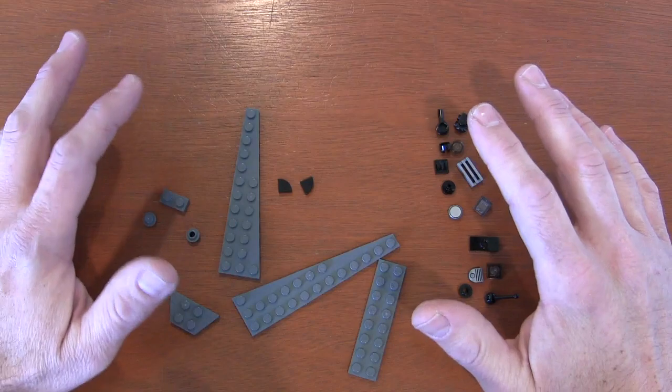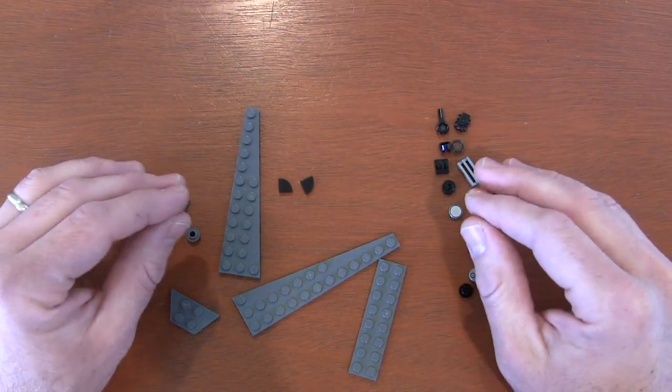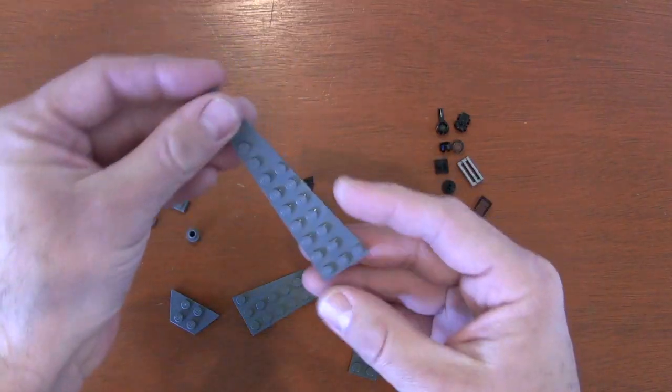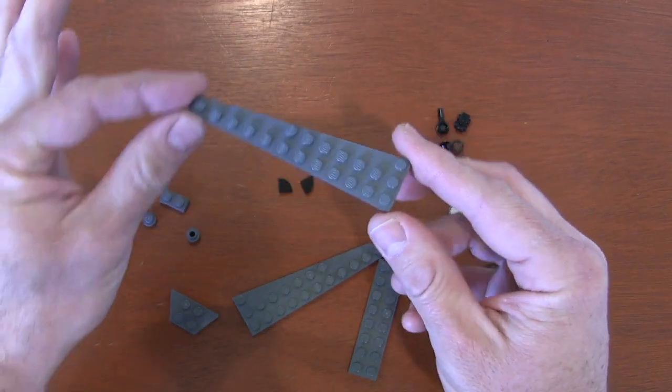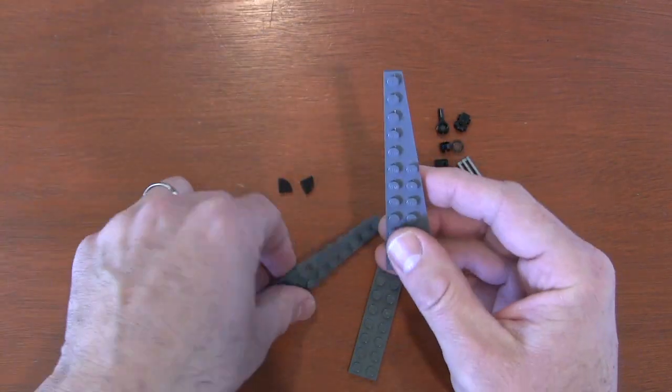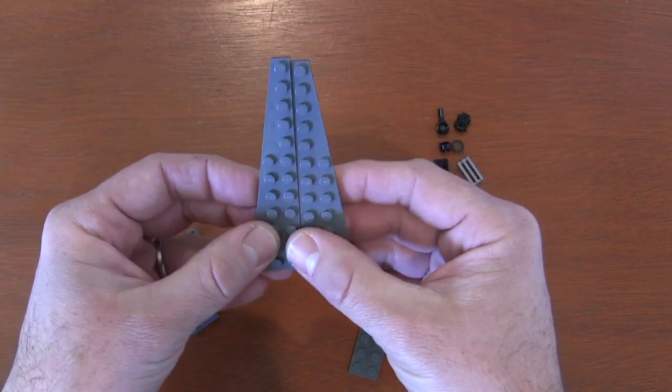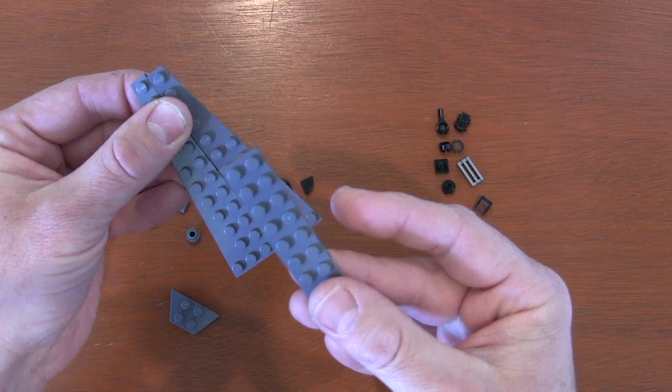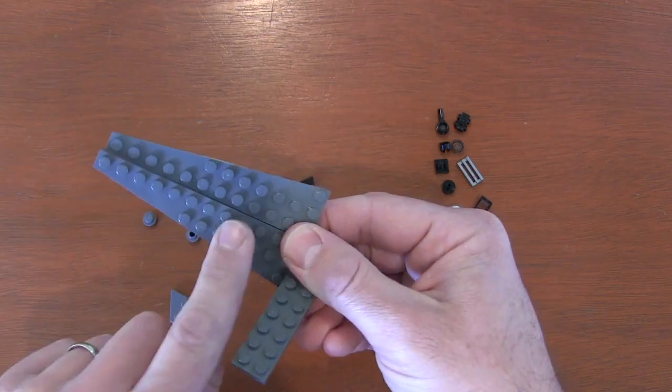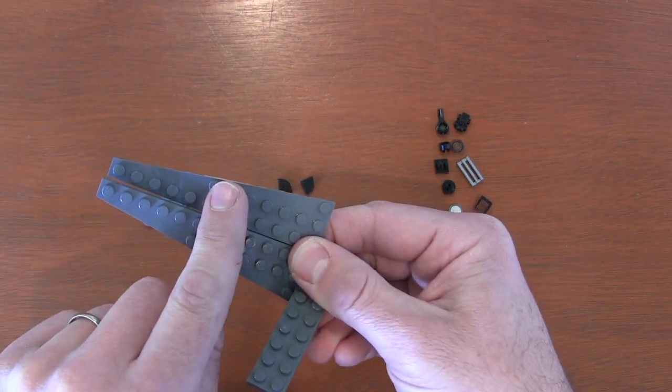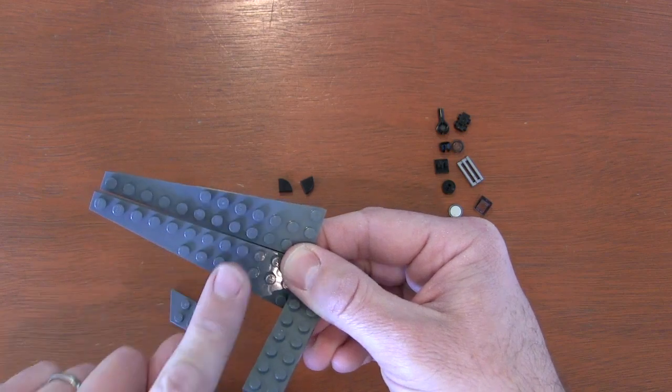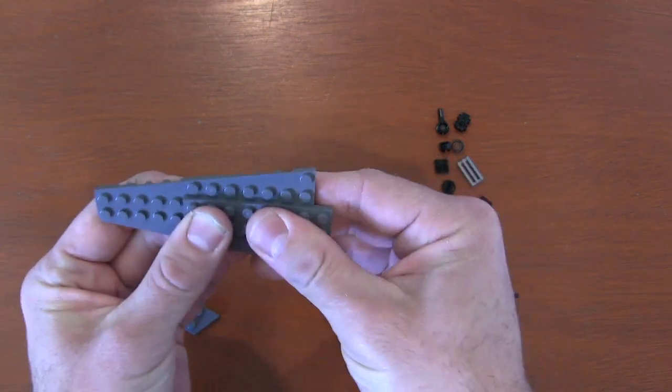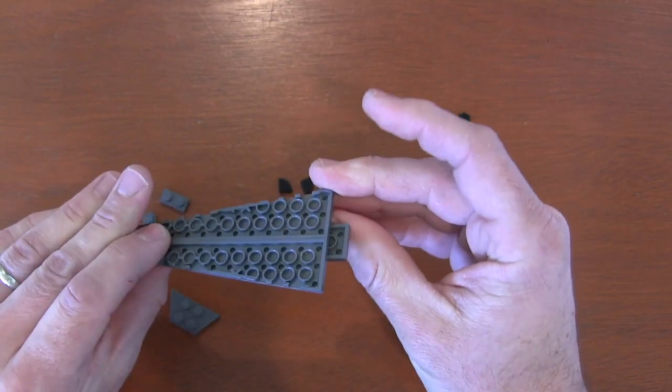The thing about a Super Star Destroyer is that even in micro scale, it needs to be huge. So I'm going to grab these 12 by 3 wedge plates for the base and put them together like this, and hold them together with a 2 by 8 plate. I'm going to put that 2 by 8 plate right here where the 4 studs across begins. That's going to give me a little bit of an overhang here.